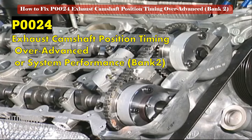PCM monitors the camshaft position when VVT is functioning. Normally when the engine is running at 2000 to 3000 RPM, PCM will activate the VVT by sending the activation command to the VVT solenoid, which is sometimes called the oil control valve or OCV. When OCV is activated but there is no change in camshaft position, PCM will set a fault code. P0024 is set if the difference between bank 2 exhaust camshaft's actual position and desired position is more than 20 degrees.